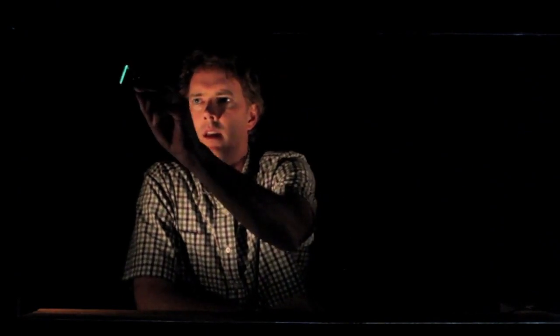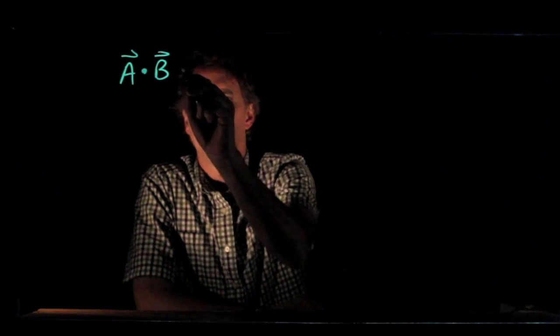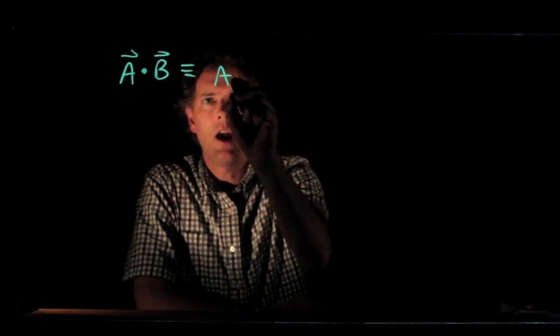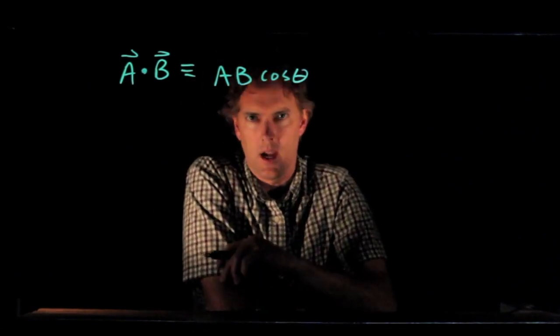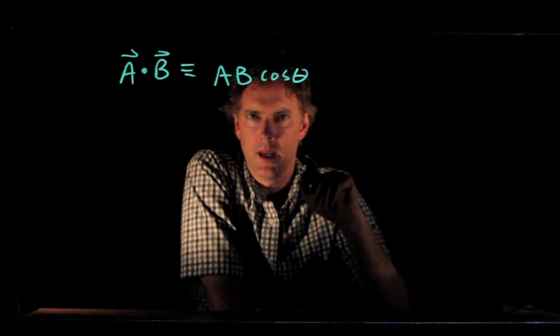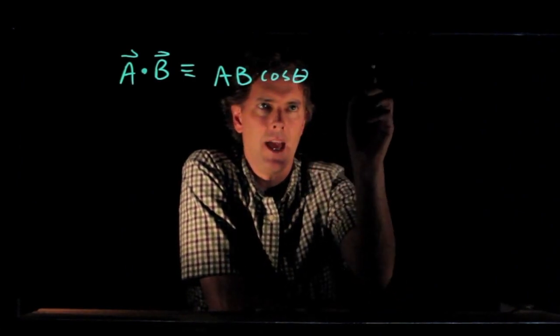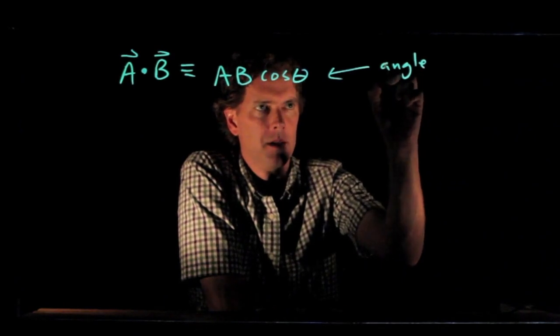Hello class, Professor Andersen here. Let's talk about the dot product of two vectors. The way it's defined, A dot B is A B cosine of theta. A is of course the magnitude of vector A, B is the magnitude of vector B, and theta is the angle between A and B.